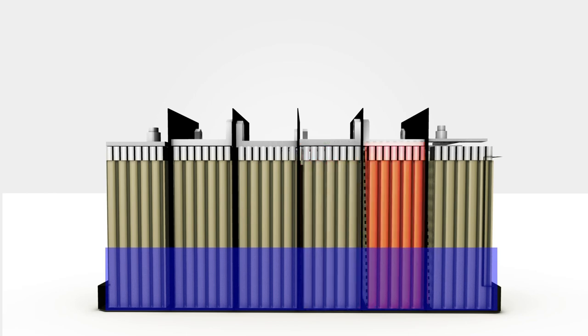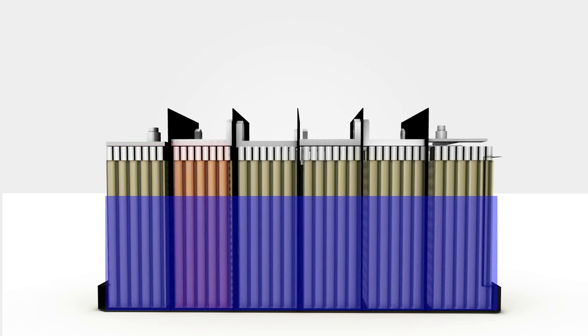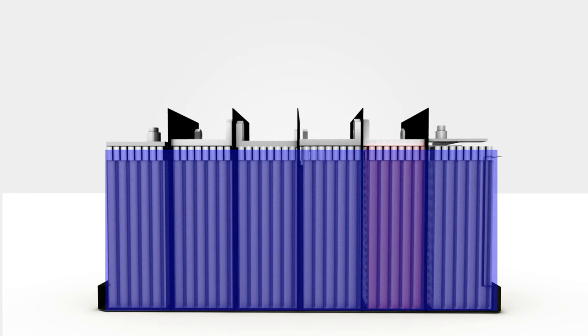The electrolyte solution is a combination of 35% sulfuric acid H2SO4 and 65% water H2O. To prevent the negative and positive plates from touching, a porous insulator is placed between each plate. The insulator allows the electrolyte solution to flow freely between the negative and positive plates.